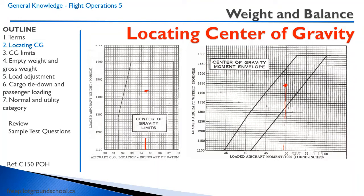You might wonder why the center of gravity limits aren't a simple rectangle. The limits have a sloped boundary because when you're very far forward and at high gross weight — say 32 inches forward — the combination doesn't work. The reason for this sloped line is nose gear structural limitation: if you have too far a forward center of gravity combined with too much weight, you'll put too much stress on the nose gear. You can see the change of slope right here on the chart, just below 1200–1300 pounds.